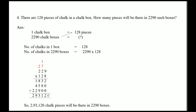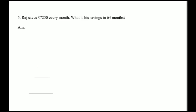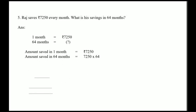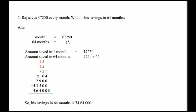Sum number five: Raj saves rupees 7250 every month. What is his saving in 64 months? The amount saved in one month is given; you have to find the amount saved in 64 months, so you will do multiplication. Ignore the zero in 7250 and add it at the end. Multiplying 725 by 64 and adding the zero, the final answer is 4 lakh 64,000. His saving in 64 months is 4 lakh 64,000. Thank you, that's all for today.